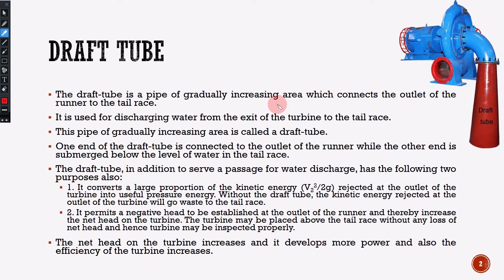Impulse turbine works on kinetic energy, and reaction turbine works on kinetic energy plus pressure energy. Here we are going to start with the impulse turbine. In the impulse turbine, the outlet has normal atmospheric pressure. So this is the outlet condition.